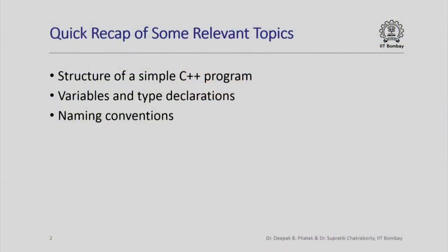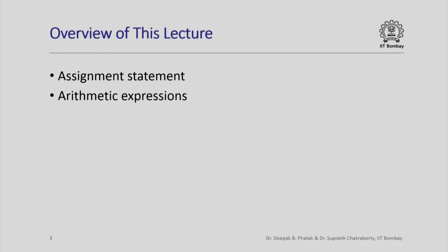Here is a quick recap of some of the topics we have seen earlier. We have seen the structure of a simple C++ program, variables and type declarations, and how to give names to variables and functions. In this lecture we are going to look at the assignment statement and arithmetic expressions that arise in assignment statements in a bit of depth.